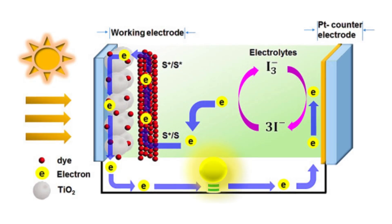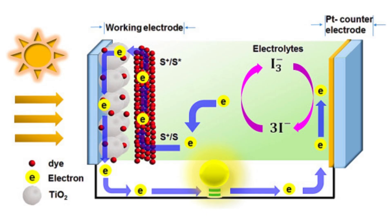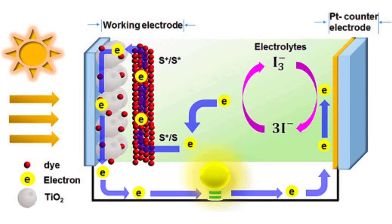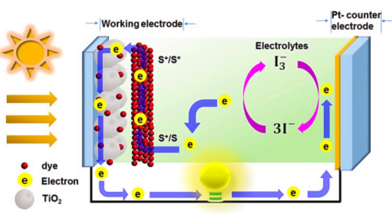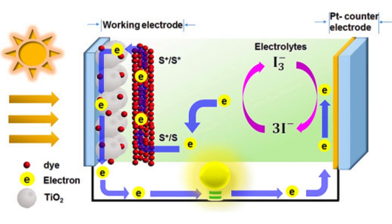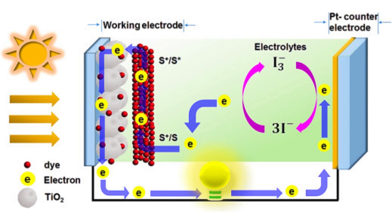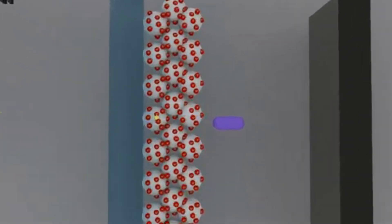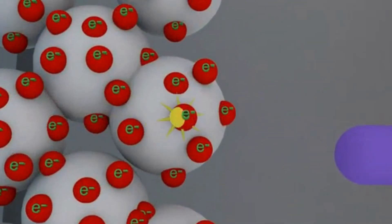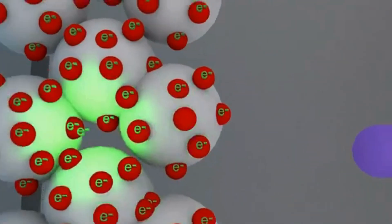These electrons then travel through an external circuit to power a device before returning to the electrolyte, which regenerates the dye. The process is completed when the iodide/triiodide redox couple in the electrolyte reduces the triiodide ions at the counter-electrode, a reaction facilitated by a platinum catalyst.